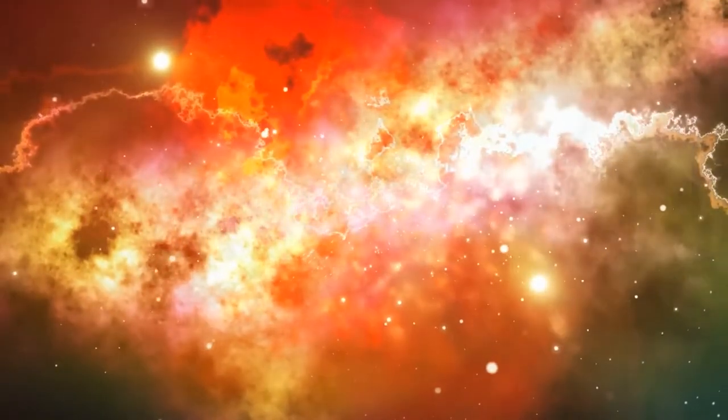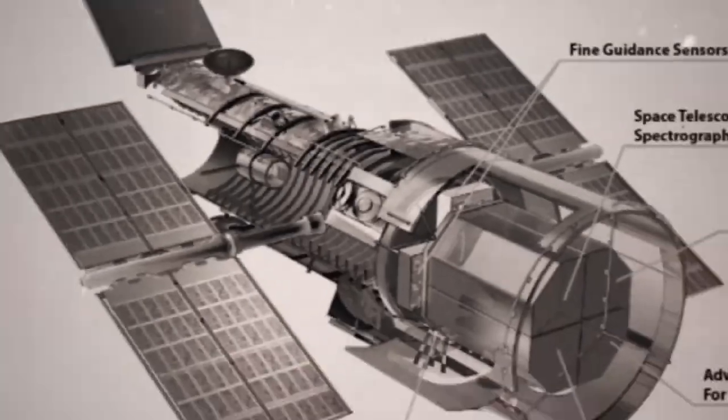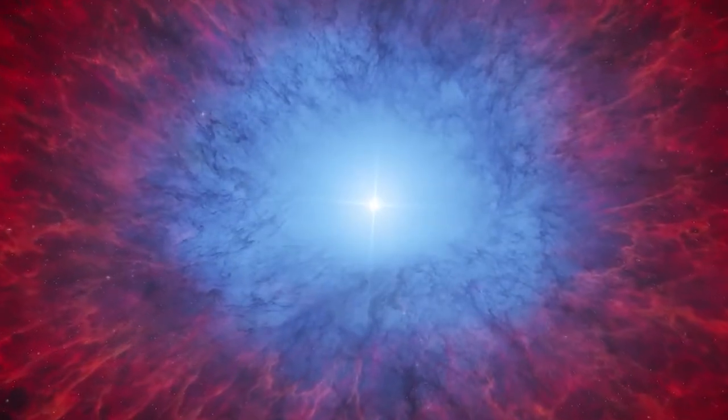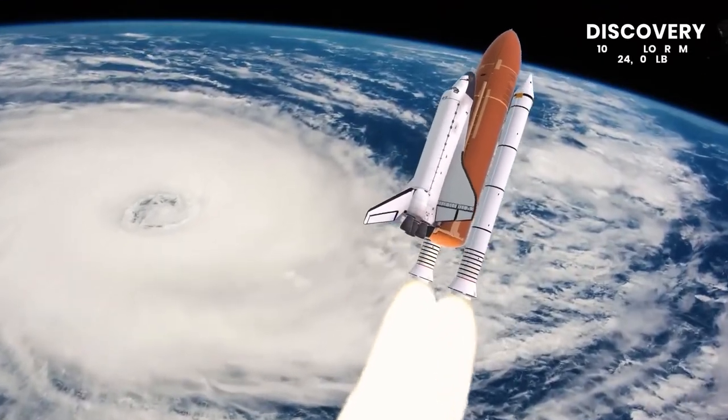On a galactic scale, this implies that something with a lot of gravity, like a cluster of galaxies, can bend and magnify the light of something behind it in the far off. This is referred to as gravitational lensing.